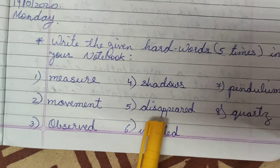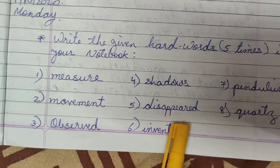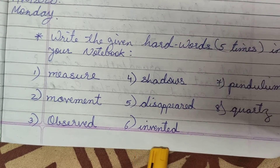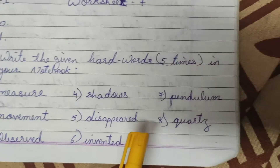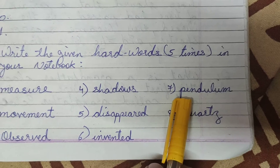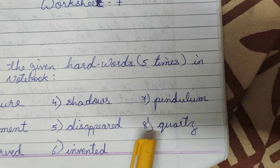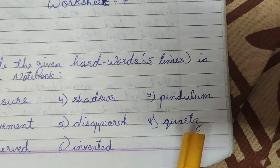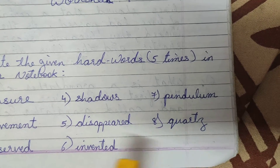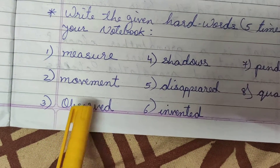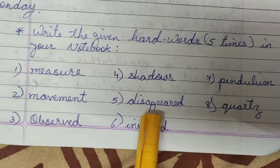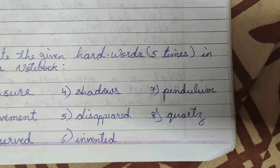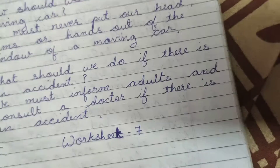Number 5: disappeared — d-i-s-a-p-e-a-r-e-d, disappeared. Number 6: invented — i-n-v-e-n-t-e-d, invented. Number 7: pendulum — p-e-n-d-u-l-u-m, pendulum. Number 8: quartz — q-u-a-r-t-z. Note: the 'r' here is silent, so we read it as 'quartz'. So our 8 hard words — measure, movement, observed, shadows, disappeared, invented, pendulum, and quartz — are to be completed.